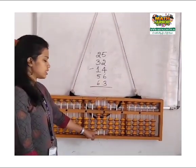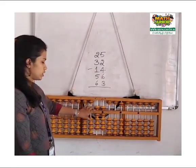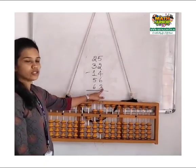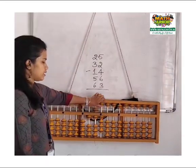Next 63. So 60 I cannot place in the tens rod, so take the help of 60. Plus 100 minus 40, and 3 in the units rod is plus 10 and minus 7.